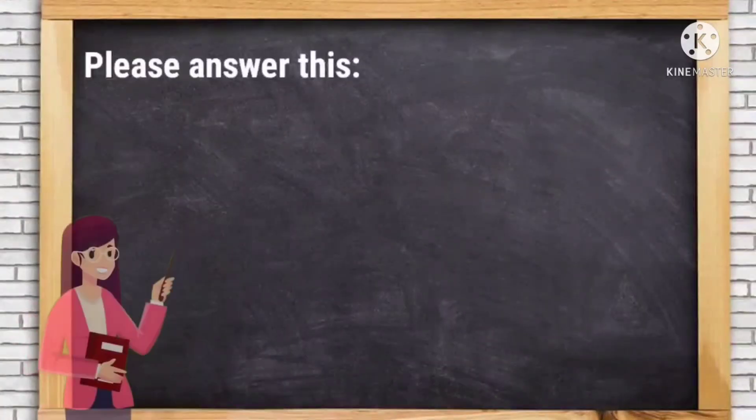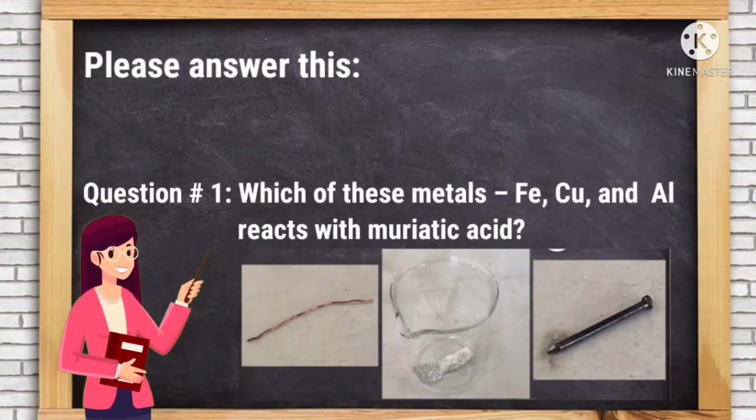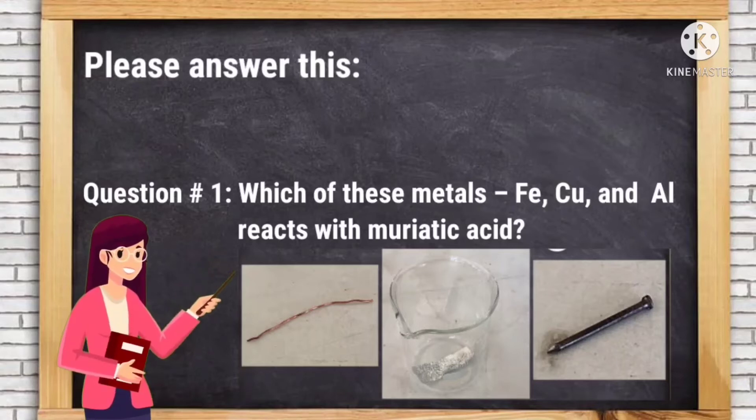Please answer this. Question number one, which of these metals - iron, copper, and aluminum - reacts with muriatic acid?